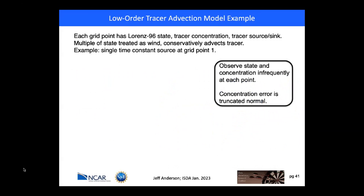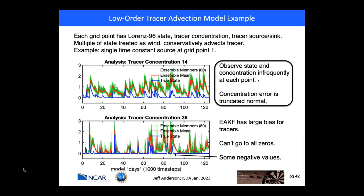In the assimilation example, I observe the state and concentration variables infrequently at each point. The concentration error is a truncated normal so you don't get any negative observation values. This is a time series using a standard EAKF of the tracer concentration at the two grid points. The blue is the true state showing plumes blown in from the left (top panel) and from the right (bottom panel), with times when concentration goes completely to zero. When applying the EAKF, the ensemble mean (red) is heavily biased, with the 80-member ensemble members shown in green — and occasionally negative ensemble members appear.